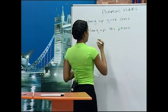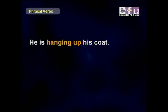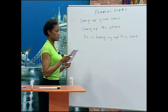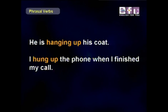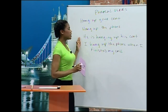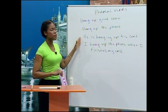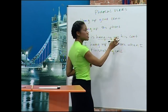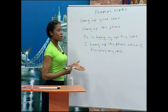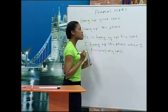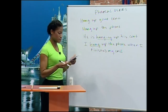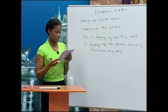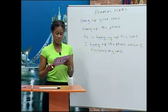Like normal verbs, we use phrasal verbs with different tenses by changing the verb part. For example: 'He is hanging up his coat' — we use present continuous by changing only the verb; we don't change the preposition. In the same way, we can switch to past tense and say 'I hung up the phone when I finished my call.'